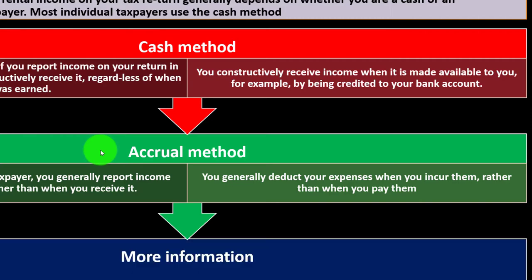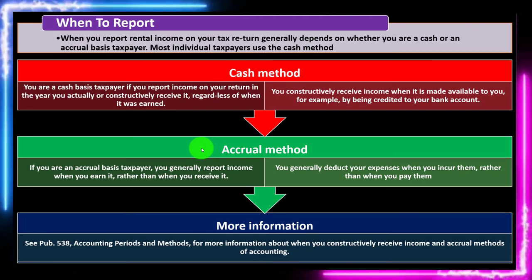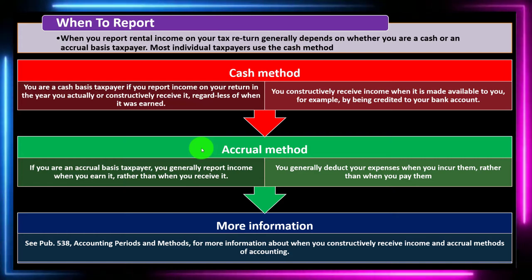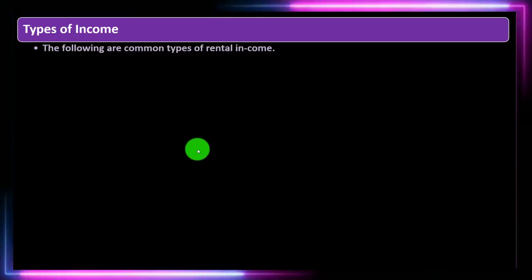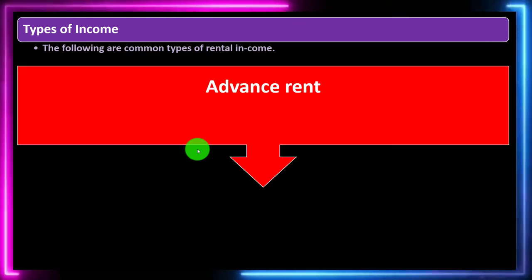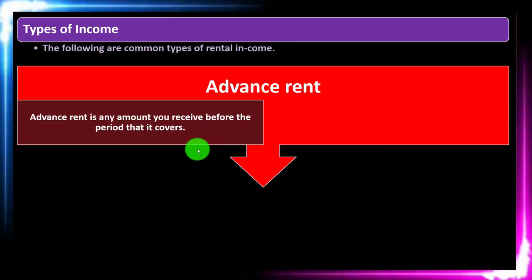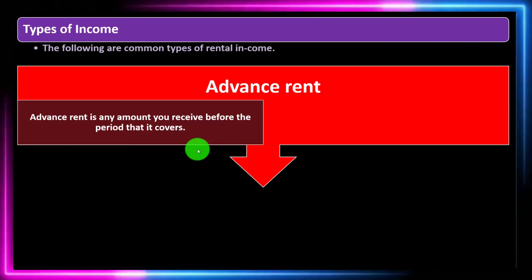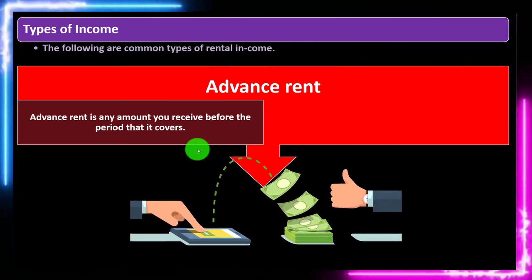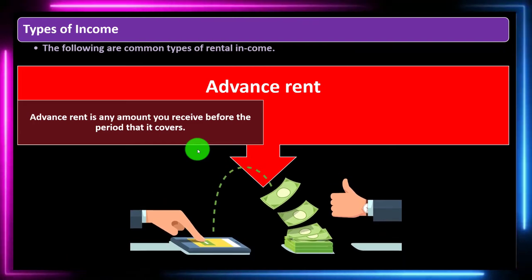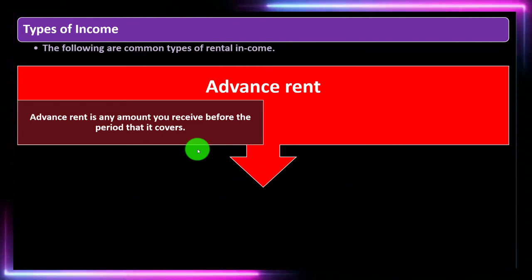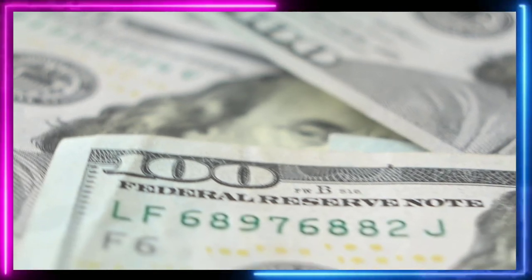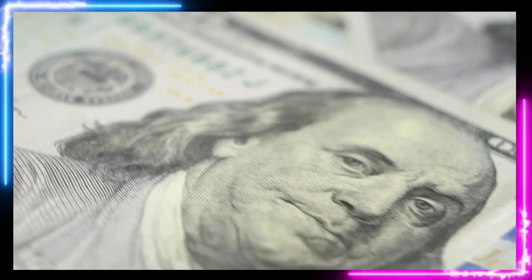For more information on when to constructively receive income and accrual methods, see Publication 538, Accounting Periods and Methods. Types of rental income: the following are common types. Advanced rent is any amount you receive before the period it covers — typically you have the rental period and then they pay rent, so an advanced payment means you got the money before providing the rental property.